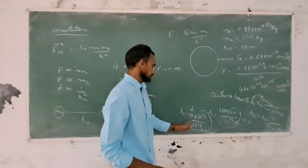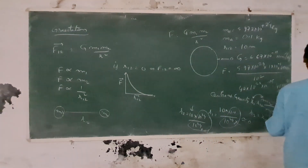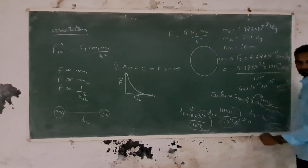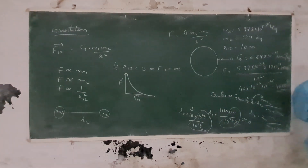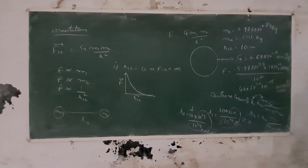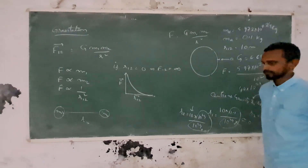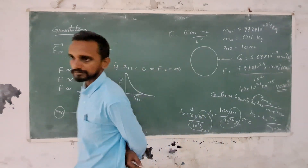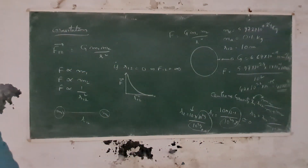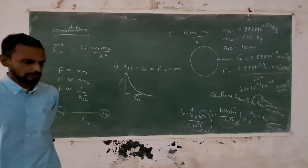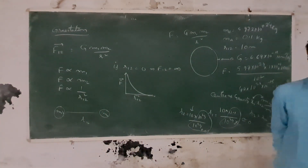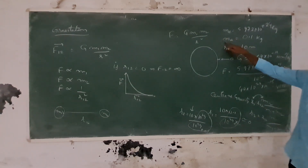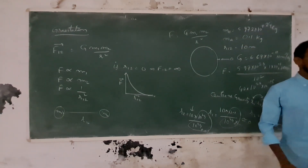The apple has to move the entire distance, whereas the earth barely moves at all. The amount of force is the same on both. This becomes a countable, noticeable effect when you consider heavy planets, like the Sun and Jupiter.